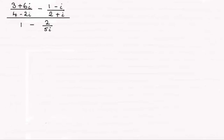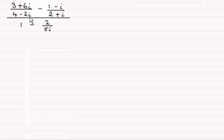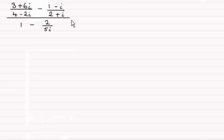Hi there. If you want to test your algebraic skills with the division of complex numbers, then this might be the question for you. What I've got here is (3 + 6i) / (4 - 2i) minus (1 - i) / (2 + i), and then all of this top is divided by 1 minus 2 divided by 5i. If you'd like to have a go at this one, just pause the video. When you come back I'll take you slowly through the worked solution.